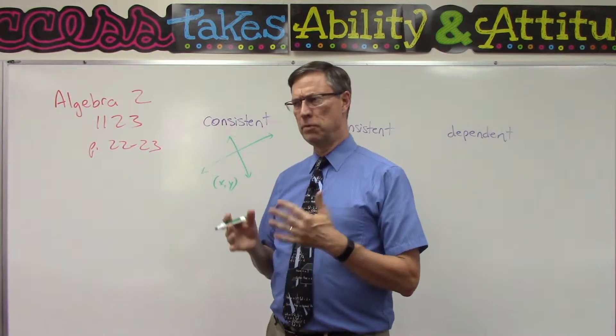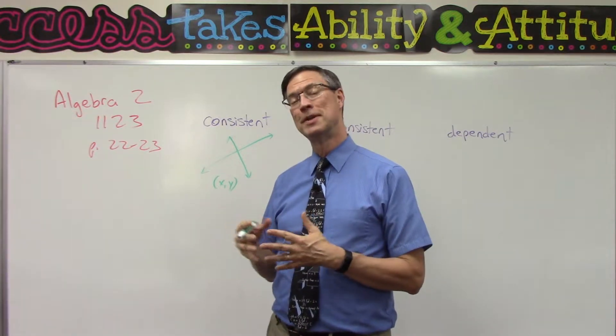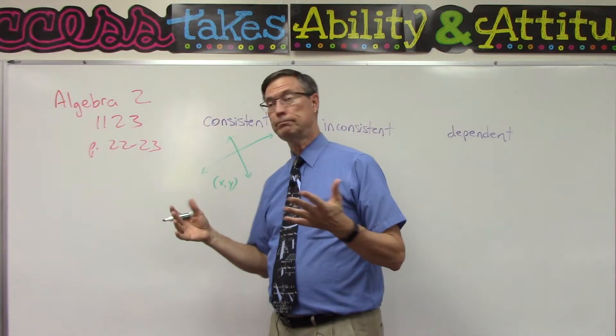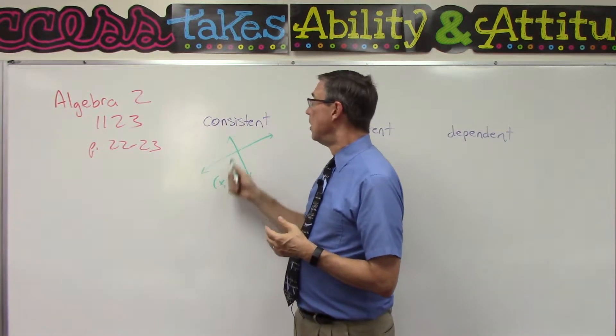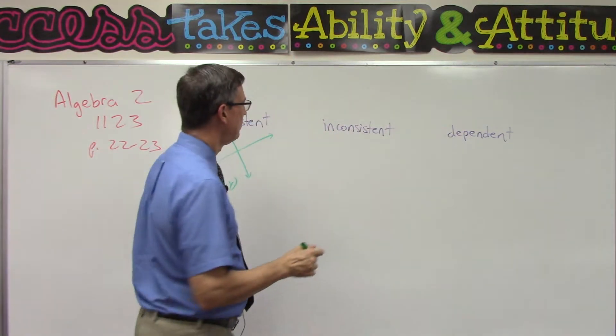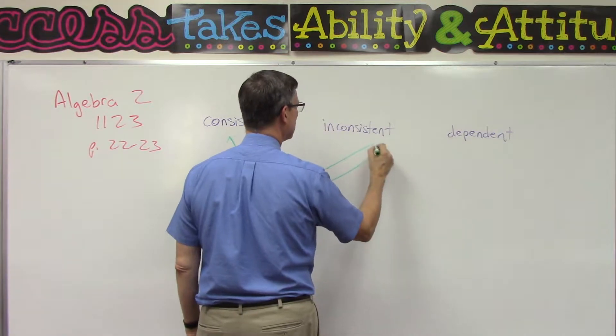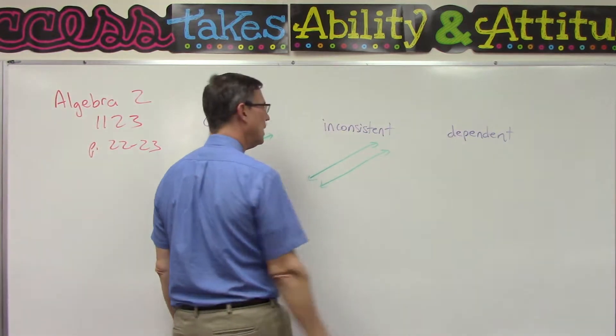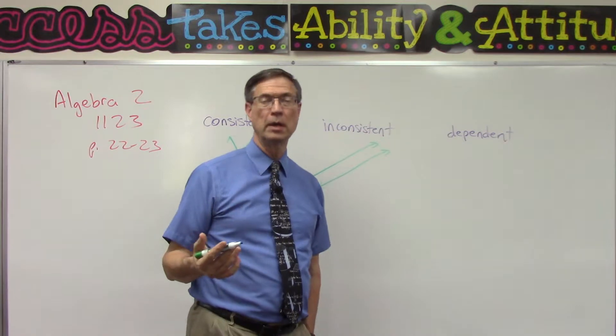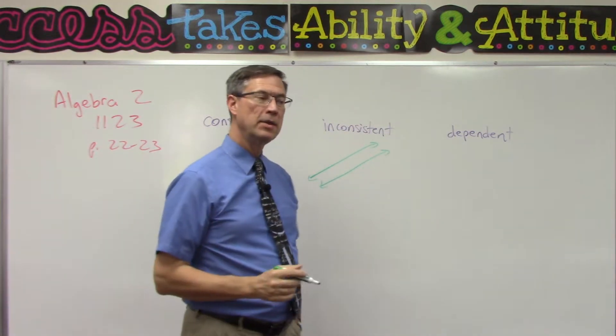We might do the substitution or the elimination method - this is called consistent. Now, what if we end up with two lines and they don't intersect? We would say they are parallel if they have the same slope.